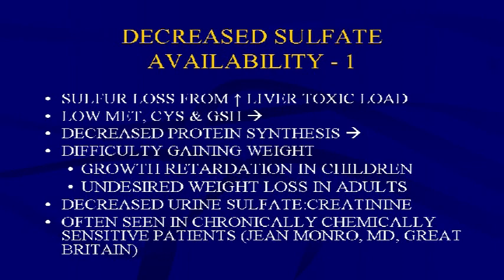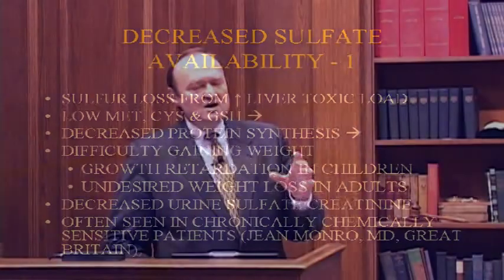Chronic use is the problem, not acute use. If patients use fatty acids and proper pain relief techniques, they can usually cut down the inflammatory process without needing NSAIDs at all. Decreased sulfate and sulfur loss from increased toxic load to the liver causes low methionine, cystine, and glutathione, which causes decreased protein synthesis. Protein synthesis depends on amino acid availability and is limited by the limiting amino acid — if methionine is scarce, only as many proteins can be made as there are methionine molecules available.